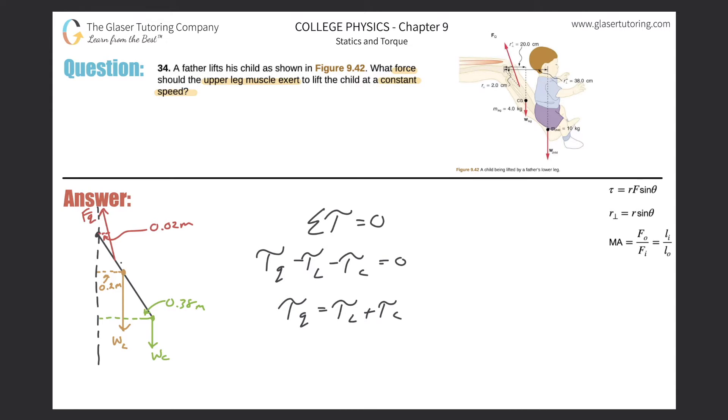And then I can expand on these. All these r's of this formula will be perpendicular, so I'm not going to keep writing that. So here we have the lever arm of the quadricep multiplied by the force of the quadricep will then equal the lever arm of the leg multiplied by the force of the leg (a.k.a. the weight) plus the perpendicular lever arm of the child multiplied by the force the child is exerting, which is a.k.a. the weight of the child.